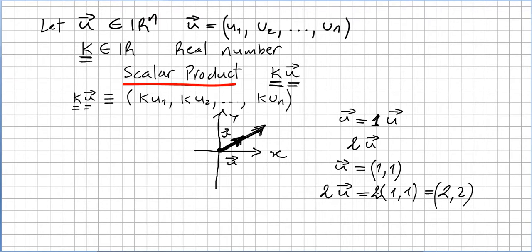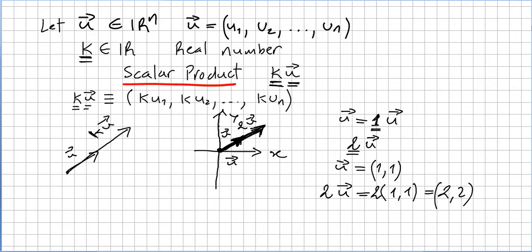So the difference between vector (1,1) and vector (2,2) — the vector multiplied by scalar 2 — is that the length of vector 2u is greater. The direction from the origin stays the same; only the length is bigger. Multiplying by k increases the length of your vector.